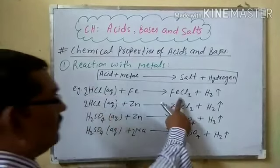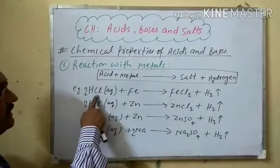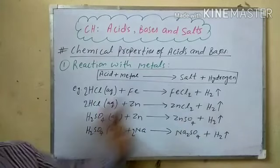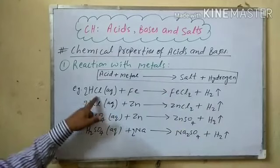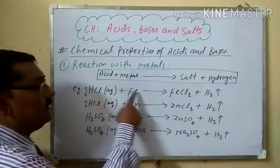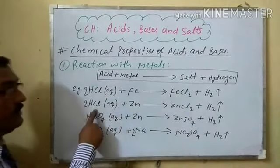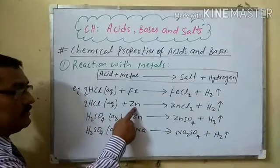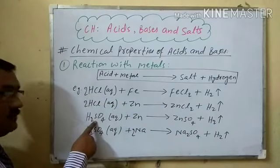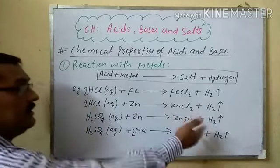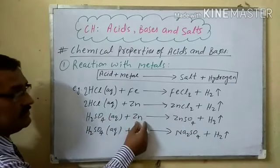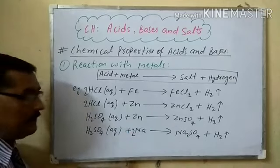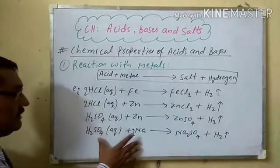For example, HCl (hydrochloric acid) plus iron gives iron chloride plus hydrogen. The hydrogen from the acid is liberated as gas, and the remaining anionic part — chlorine — combines with the metal to form the salt iron chloride. Similarly, HCl with zinc: hydrogen is liberated as gas, chlorine combines with zinc to form zinc chloride. And H2SO4 (sulfuric acid) with zinc: hydrogen is liberated, and the sulfate combines with zinc to form zinc sulfate.